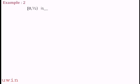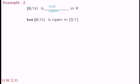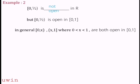Example 2: Consider the interval [0, 1/2]. What type is this — open or closed? In R, 0 is not an interior point, so [0, 1/2] is not open. But [0, 1/2] is closed. In the metric space (0,1), however, the set [0, 1/2] relative to (0,1) can be considered open. In general, [0, x] and [x, 1] partition within (0,1). Openness depends on the ambient space.